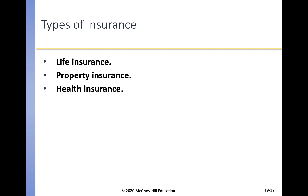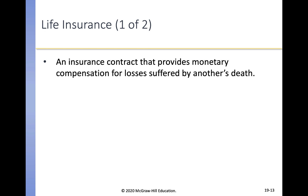There are many types of insurance. We're going to talk about life, property, and health insurance. Life insurance is a contract that provides monetary compensation for losses suffered by another's death. Premiums are based on many factors including the age and health of the insured, the coverage, and the type of policy. If you've purchased life insurance, you usually have a short medical exam. Younger people are cheaper to insure because they're less likely to die, and healthy people are cheaper because they're less likely to get sick.